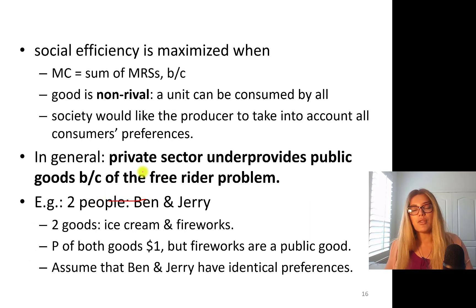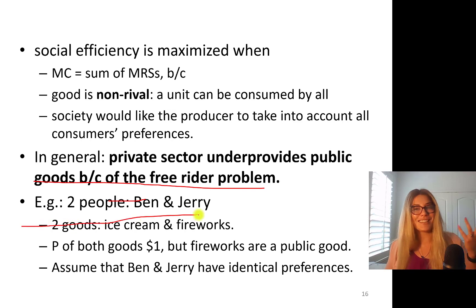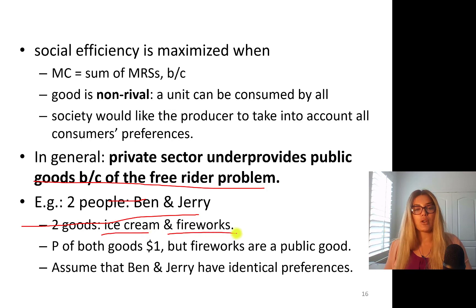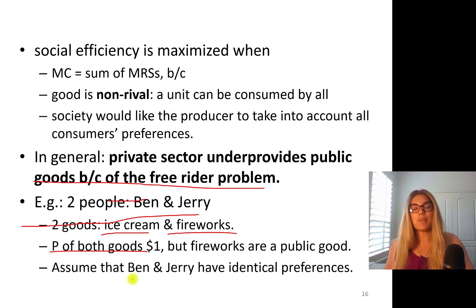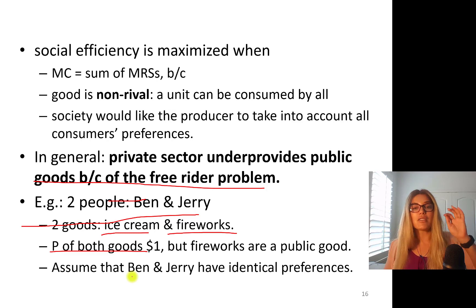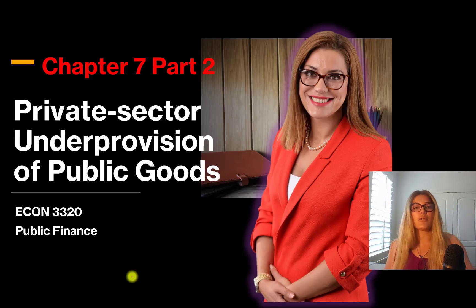Private sector under-provides public goods because of the free rider problem. Imagine two people, Ben and Jerry, just like in the previous part — they are consuming ice cream and fireworks. The price of both ice cream and fireworks is going to be $1 for simplicity, but fireworks are a public good. Assume that Ben and Jerry have identical preferences. Given these parameters, we are going to talk about how the private sector under-provides fireworks.